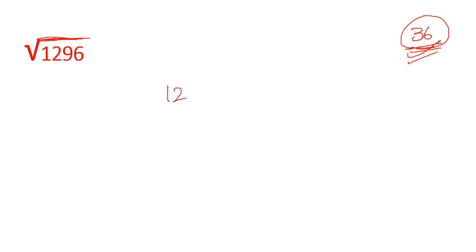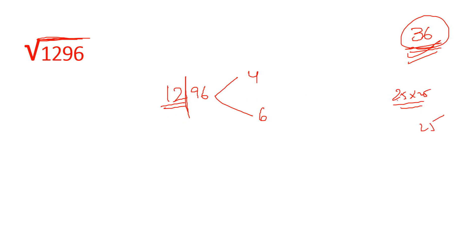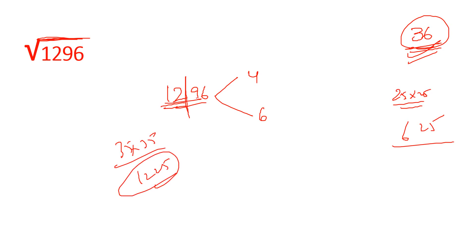We have to check the unit digit. The number ends with 6, and 6 squared ends in 6. So in the last digit, 4 gives 6. The last row: 25 is 2×3, 6×25. So 35×35, 3×4 is 12, 12×25 equals 1225. So the square root is 36.